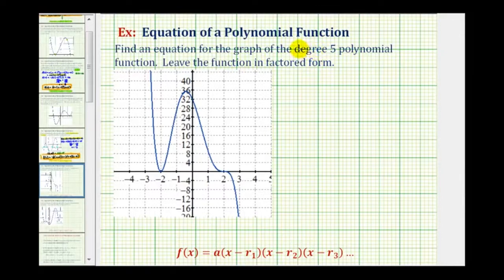Because we have a degree five polynomial function, we know we have at most five real rational zeros or roots. So let's analyze our graph.